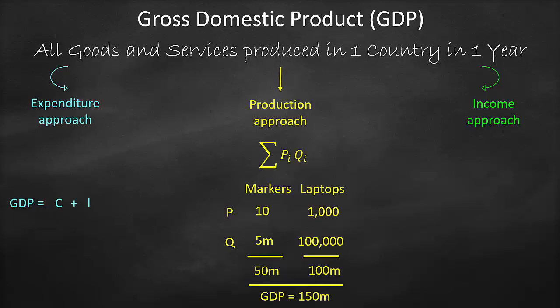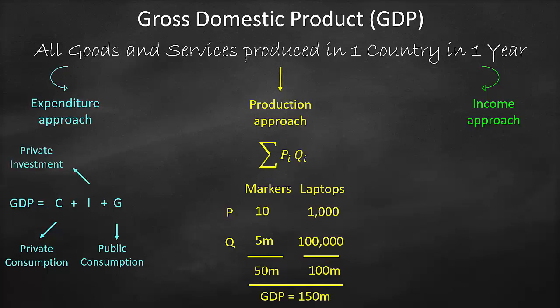So our GDP formula based on the expenditure approach begins as consumption plus investment. But is it only private investors who invest? No — the government can also invest. So we add government expenditure. Similarly, not only households make consumption; the government consumes too — building infrastructure, roads, tunnels, and bridges. We call private spending private consumption, and government spending public consumption. Investment can also be private investment, while G includes public investment.